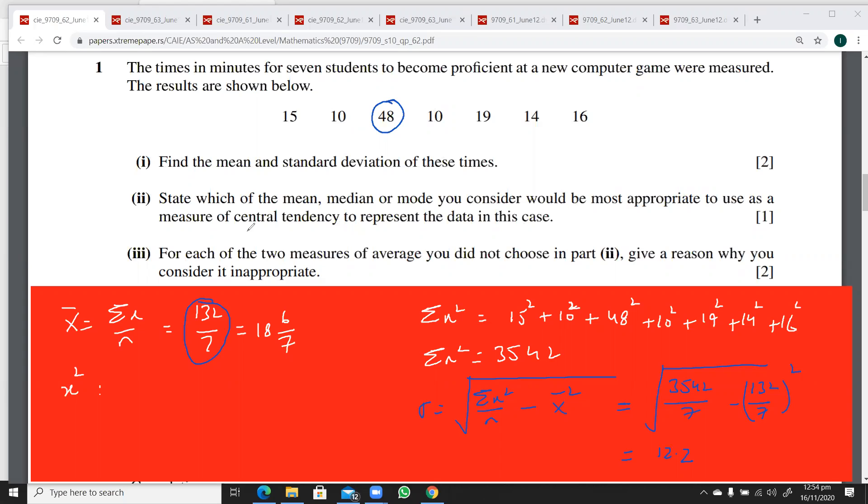It says: state which of the mean, median, or mode you consider would be most appropriate to use as a measure of central tendency. I think the best one would be the median here.